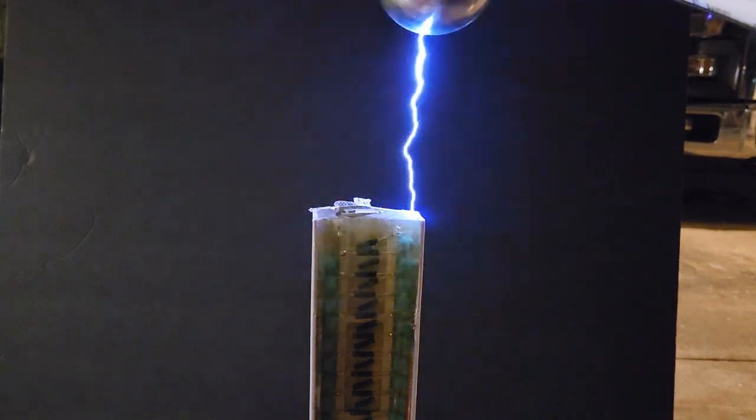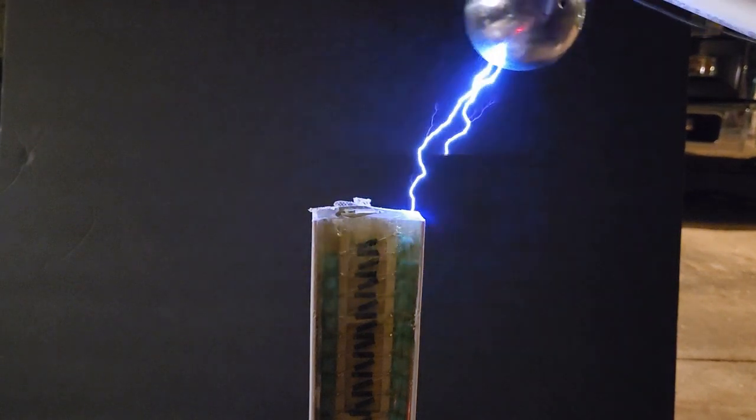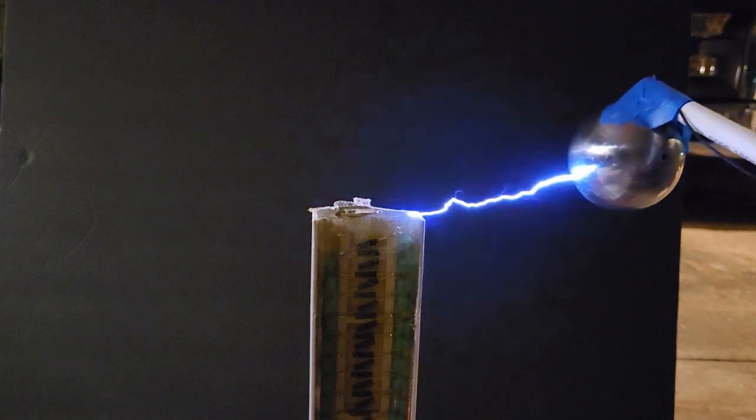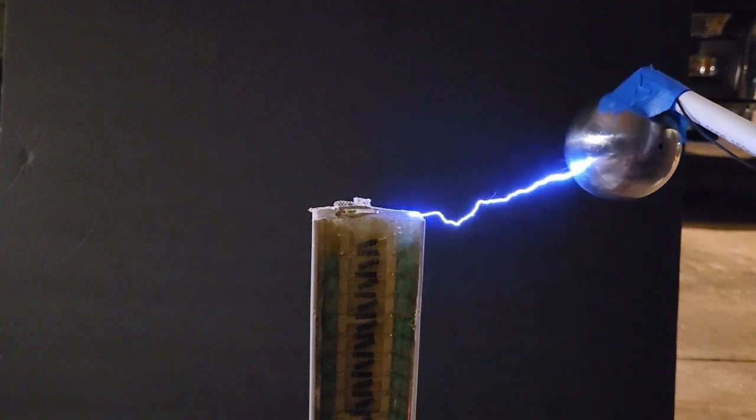Not surprisingly, removing the resistor chain gave the best results. The arcs were anywhere from 6 to 8 inches long and extremely bright. In fact, I probably should have been wearing welding goggles for this, because my eyes hurt a little bit afterward.